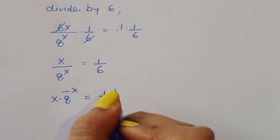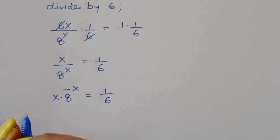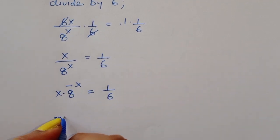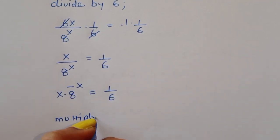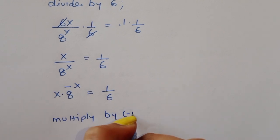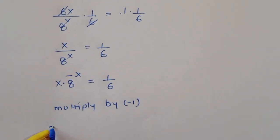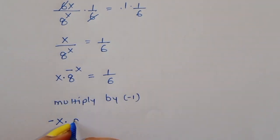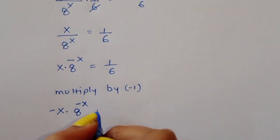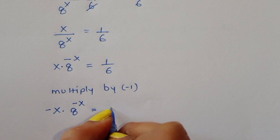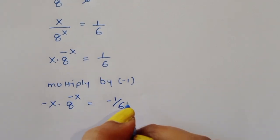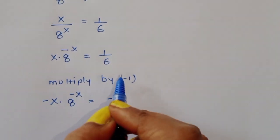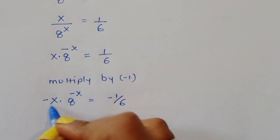Now we multiply both sides by minus 1. Then we get minus x times 8 power minus x is equal to minus 1 upon 6. We are converting this into the Lambert W function form, that's why we are multiplying with minus 1.